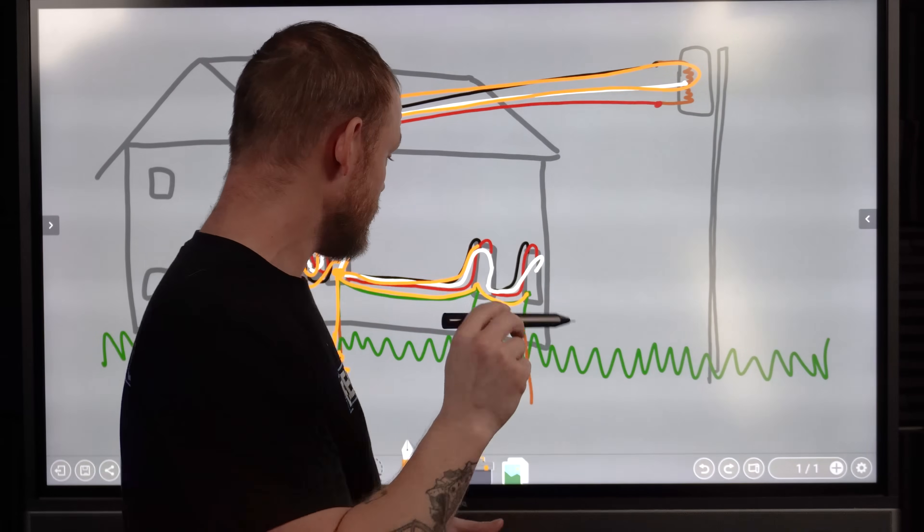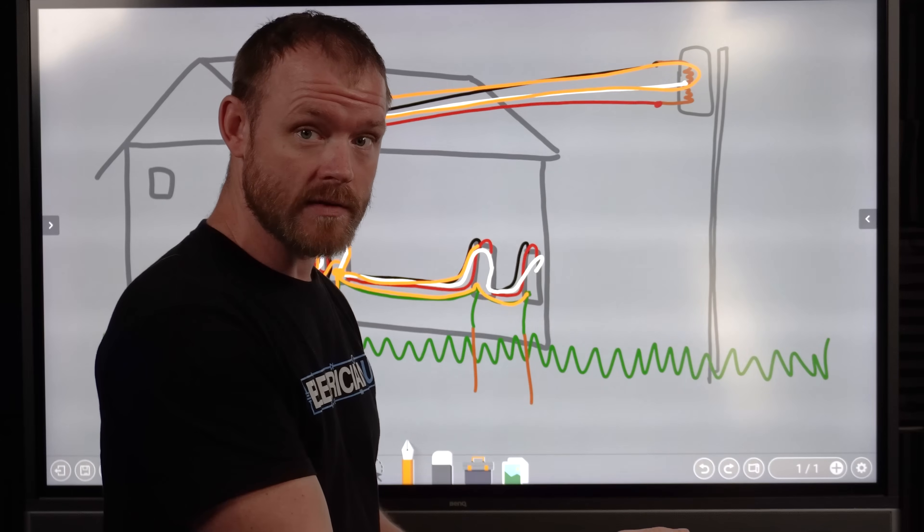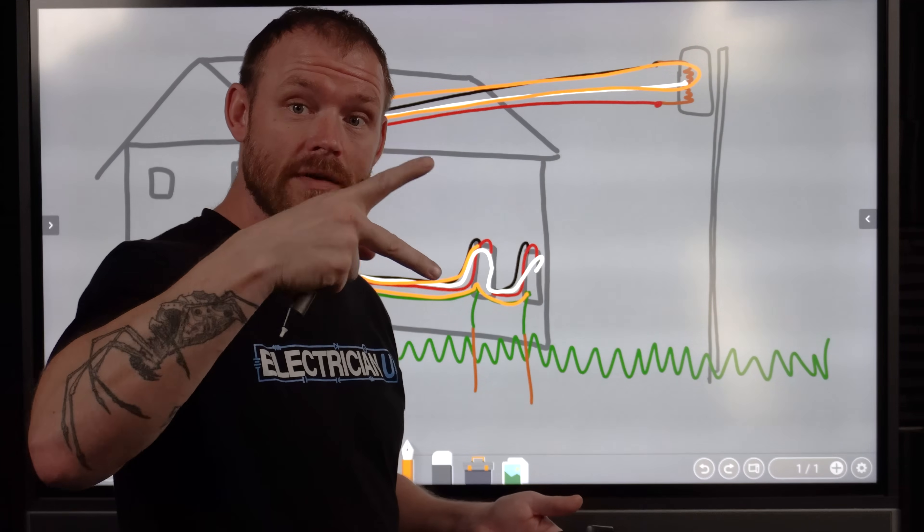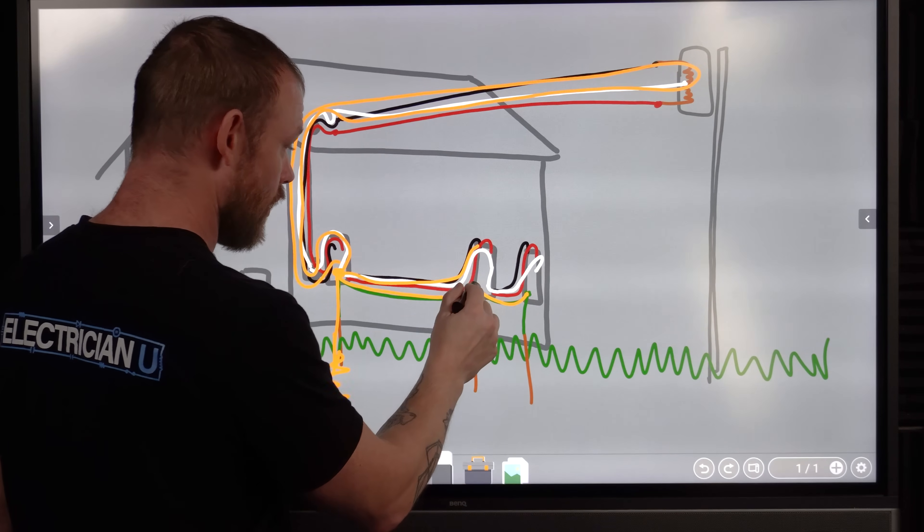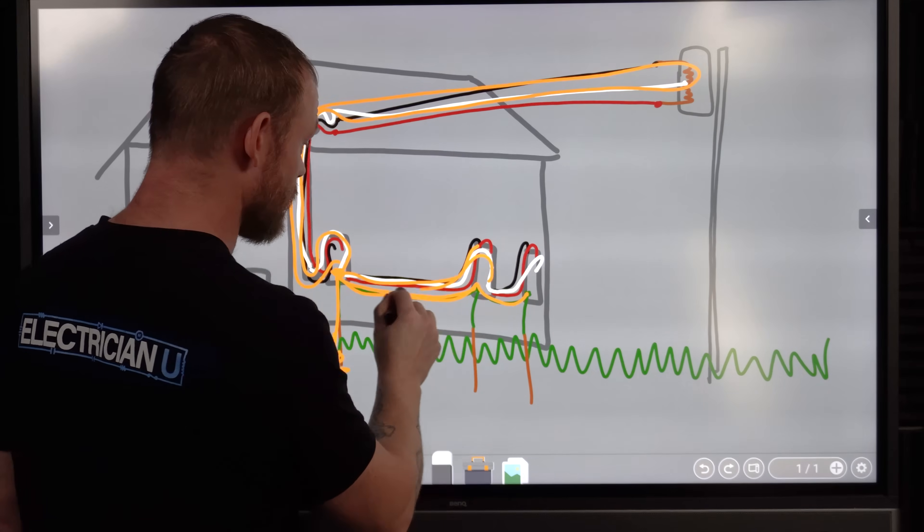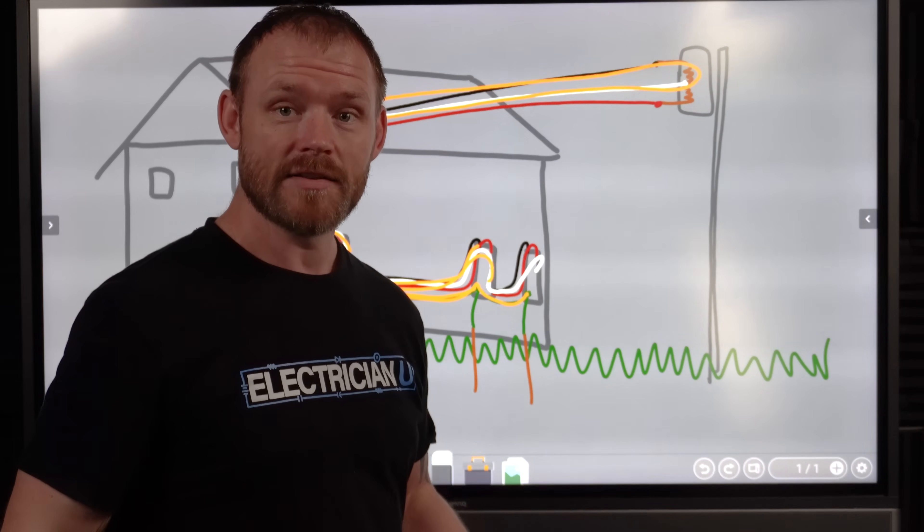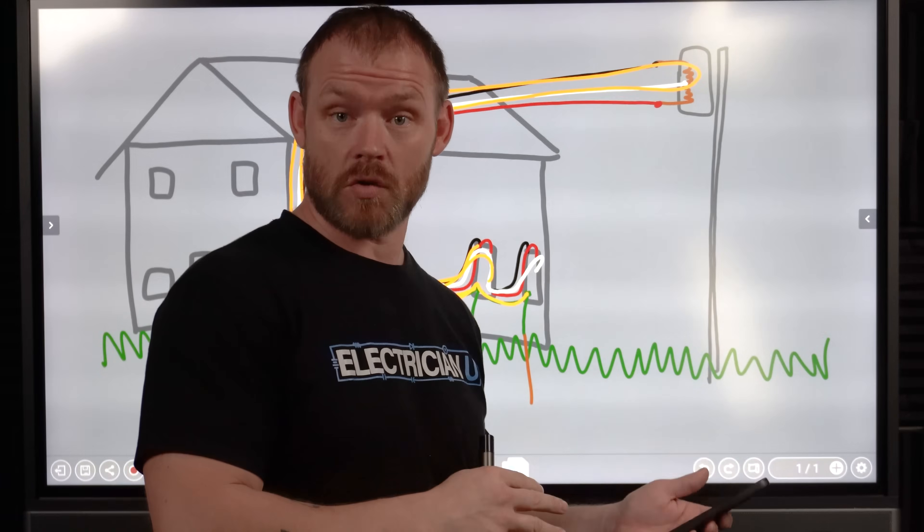Where it becomes tricky is you can't bond your ground and your neutral at each one of the panels because that gives you objectionable current potentially. You have two different paths that current can take. You could have a short go through the equipment grounding conductor and go through the neutral. And now the equipment grounding conductor is touching everything metal. So current's always going to take all paths back to source, right?